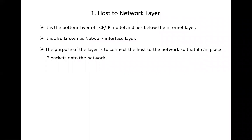The first layer of the TCP/IP model is the host-to-network layer. This is the bottom layer of the TCP/IP model, below the internet layer. It is also known as the network interface layer — you may find it called host-to-network in some books and network interface layer in others. The main purpose of this layer is to connect your computer with the network and to allow you to place the data over the transmission media.